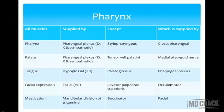All muscles of the pharynx are supplied by the pharyngeal plexus, which constitutes the 9th and 10th nerves and the sympathetic plexus — except stylopharyngeus, which is supplied by the glossopharyngeal nerve. Similarly, all muscles of the palate are supplied by the pharyngeal plexus, except tensor veli palatini, which is supplied by the medial pterygoid nerve.